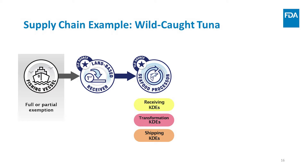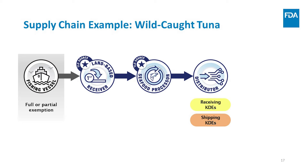Next, the seafood processor is going to send the tuna steaks to a distributor for distribution to a restaurant. The seafood processor must maintain key data elements related to the shipping of the tuna steaks to the next point in the supply chain, the distributor. They must also send many of these KDEs to the distributor. The distributor receives the tuna steaks from the seafood processor and therefore must keep receiving KDEs of the tuna steaks that they receive. Most of the information they need for these receiving KDEs will be sent to them by the seafood processor. Unlike the first land-based receiver or seafood processor, the DC is not a TLC source and therefore must not assign a new TLC to the food.